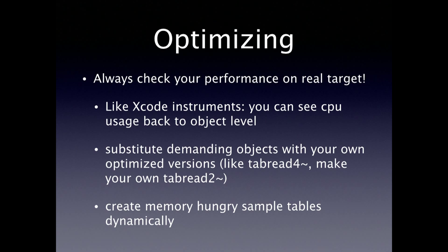At least on Raspberry Pi, iOS, and I guess also Android, there's a problem that when you make your patches on a MacBook you have a lot of CPU time, but when you go to low-power hardware you should always check performance on the real targets. If you're using iOS with Xcode, you can actually see what patches take how much CPU, so it's really easy to optimize. For example, tab read 4 has cubic interpolation, and we actually switched to tab read 2 to save CPU time.